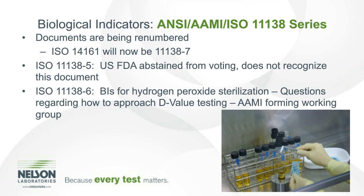Regarding biological indicators, the ISO 11138 series has seen quite a bit of activity. One document to be aware of is that ISO 14161 will now be 11138-7 — that document covers sterilization of healthcare products, biological indicators: guidance for the selection, use, and interpretation of results. Also noteworthy is ISO 11138-5, biological indicators for low temperature steam and formaldehyde sterilization processes — the FDA abstained from voting because they do not recognize this document. There is a new development regarding hydrogen peroxide sterilization and the BIs used for that modality, ISO 11138-6.